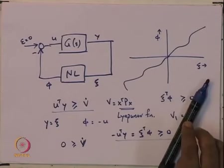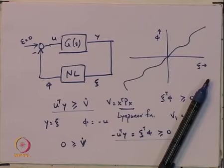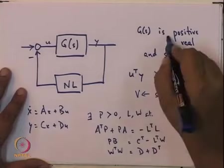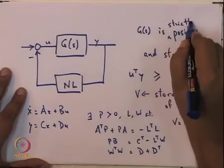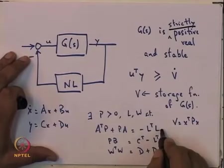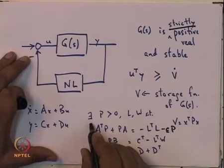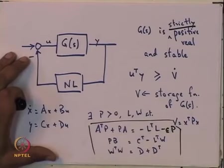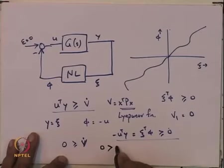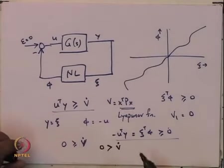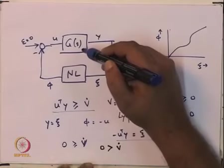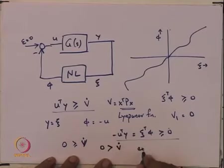Now, if you remember, we had also talked about the Kalman-Yakubovic-Popov Lemma. What we said was that if you take G to be strictly positive real, then the change in the equations is that instead of A transpose P + PA = −L transpose L, you get an additional −epsilon P term in the first equation. All other equations remain as they are. But what this means is that instead of V-dot ≤ 0, you get 0 strictly greater than V-dot. And because of that epsilon P, if G is strictly positive real, we can conclude exponential stability.